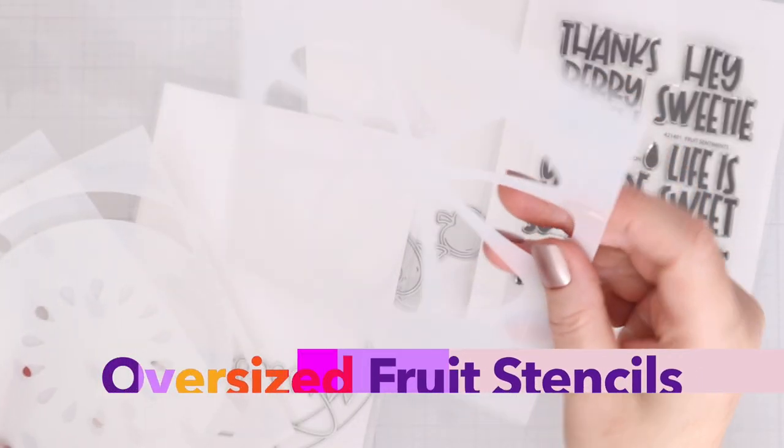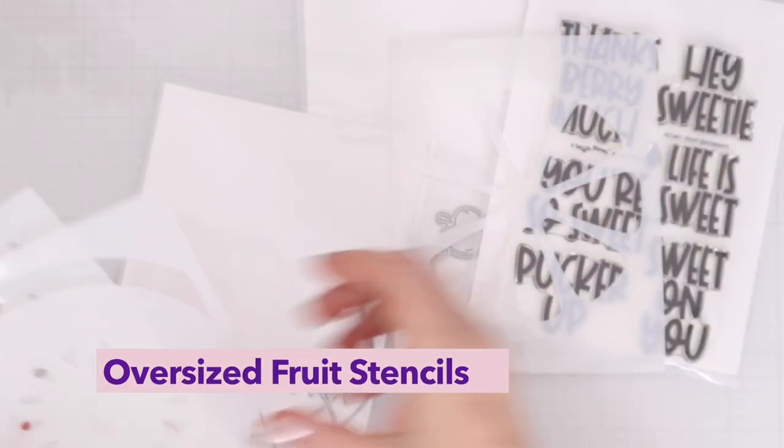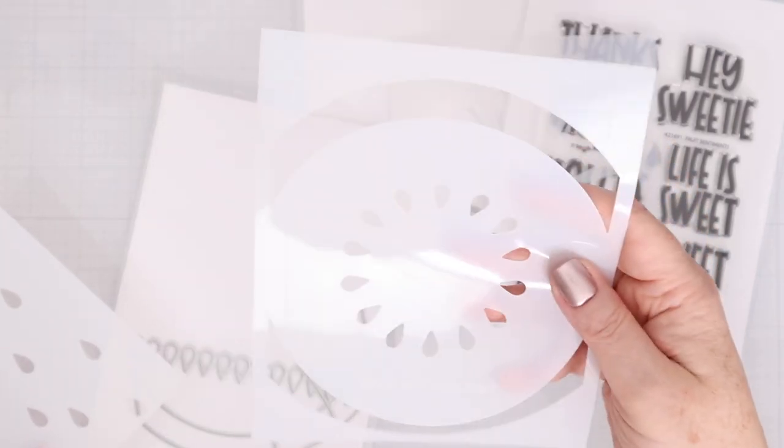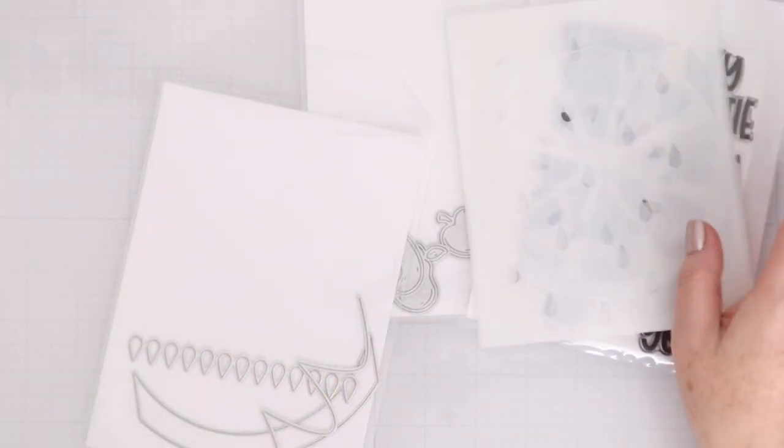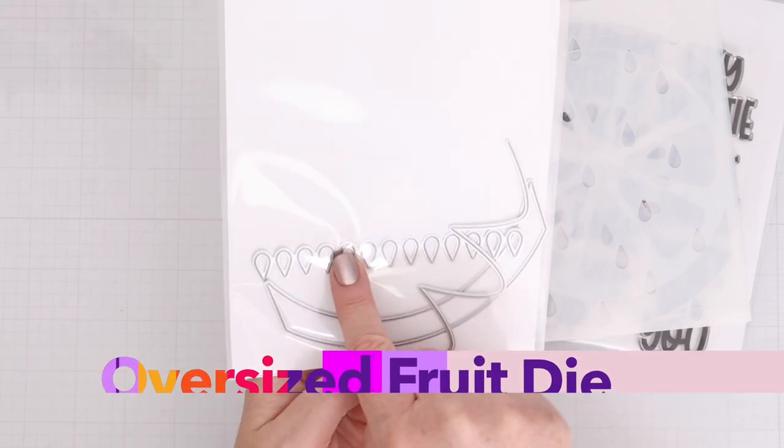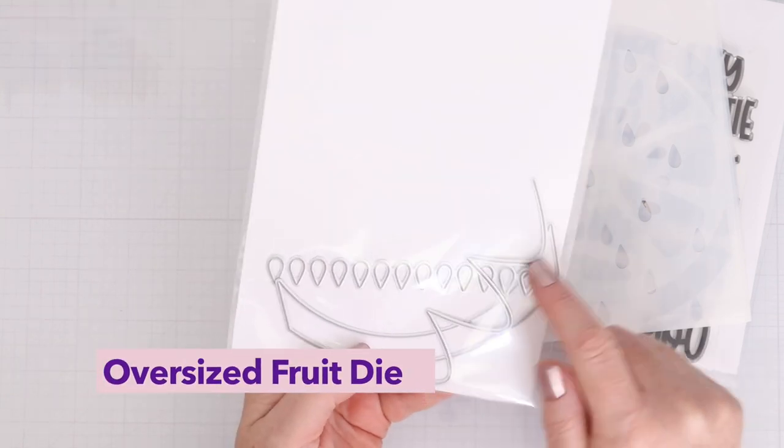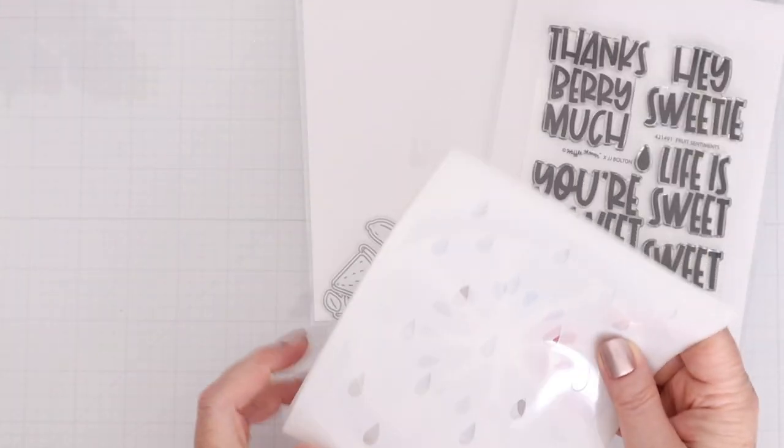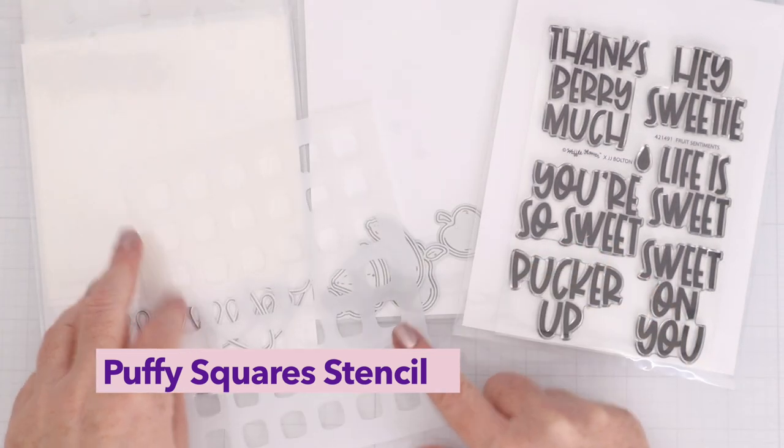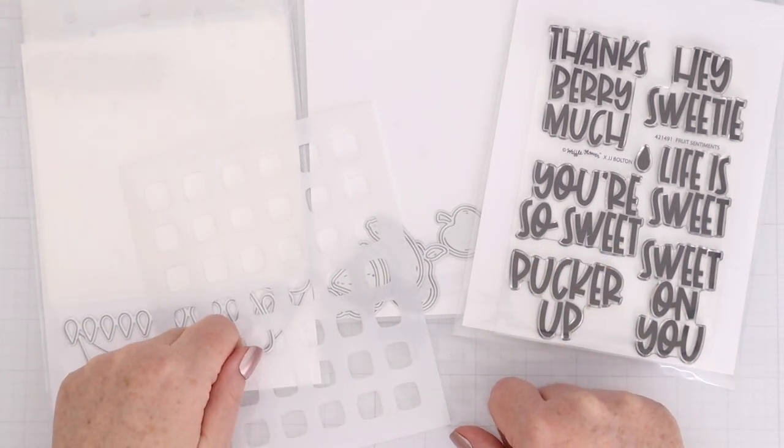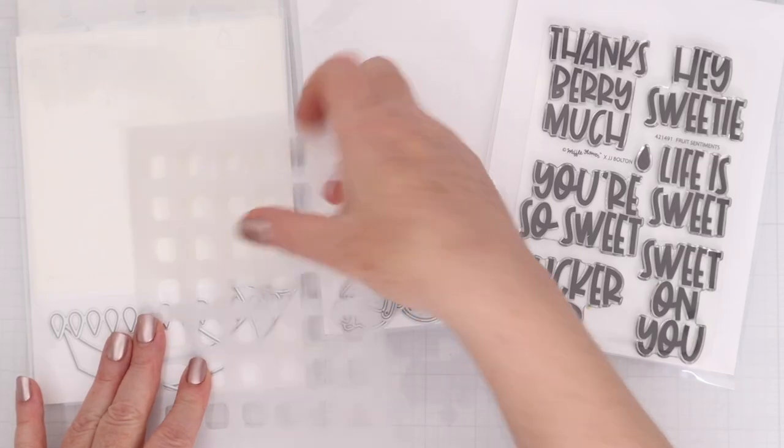Next up we have the Oversized Fruit Stencils. This is a layering stencil. There's a bunch of different fruits that you could create with this and I'll show you one today but there are plenty more your imagination can run wild with. This is the Oversized Fruit die. Same kind of deal, several dies that can create a whole bunch of different fruits. This is the Puffy Squares Stencil and I love the little puffy square shapes on that stencil.